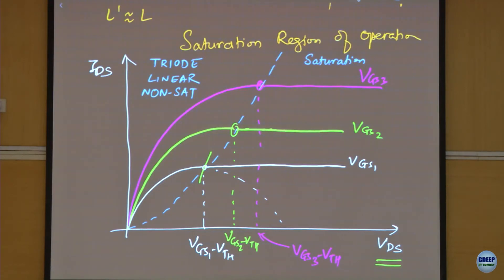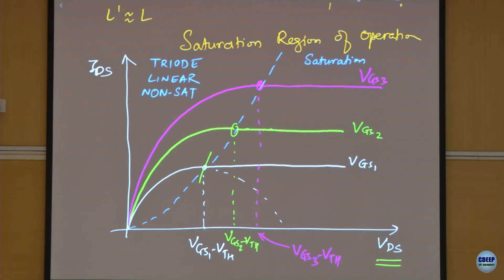Why is it called the linear region? If you remember, the resistance value R_on is inversely proportional to VGS minus VTH and is fixed. When VDS is small, the device almost looks like a linear resistor — that's why we call it linear. So linear refers to the device behaving like a resistor near the origin.